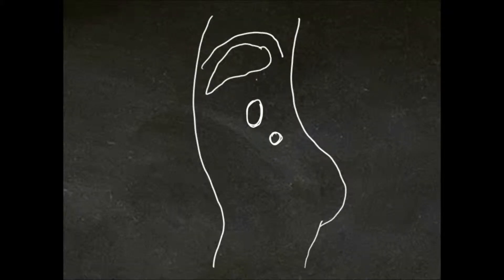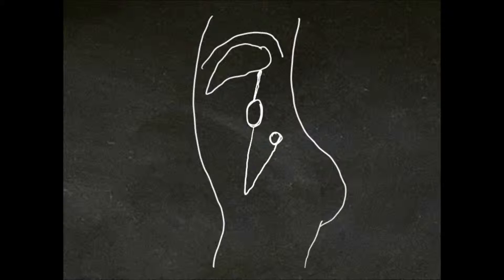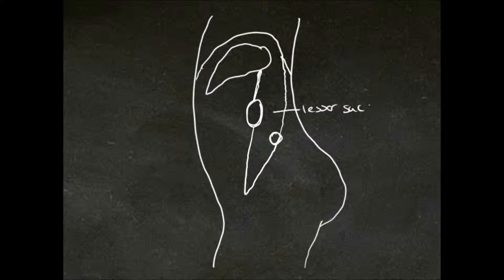Let's draw a transverse section now so we are able to see that fold of the greater omentum. The lesser omentum is attaching to the posterior part of the liver to the lesser curvature of the stomach. The greater omentum is attaching to the greater curvature of the stomach and the posterior part of the transverse colon. It creates this space, and this space is what is known as the lesser sac or the omental bursa.